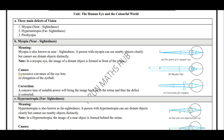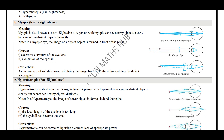The causes for myopia are excessive curvature of the eye lens and elongation of the eyeball. How can you correct myopia? You can correct myopia by using a concave lens of suitable power to bring back the image on the retina. Myopia can be corrected using a concave lens.